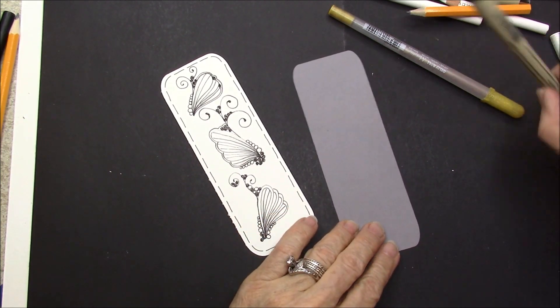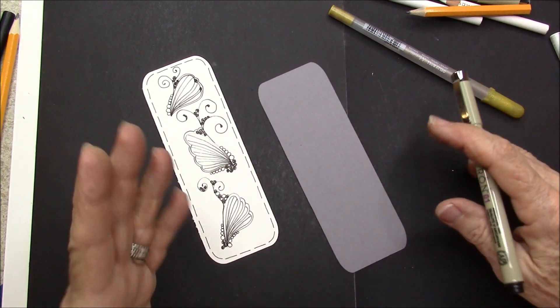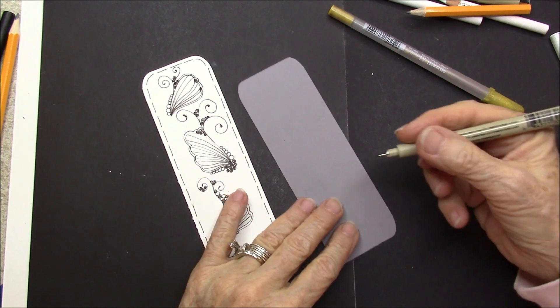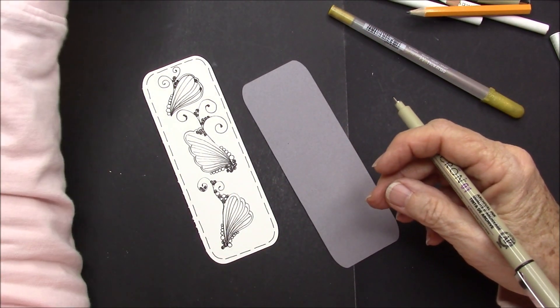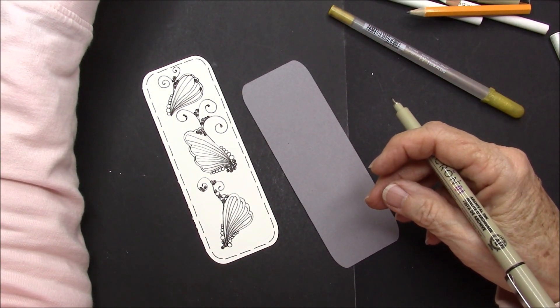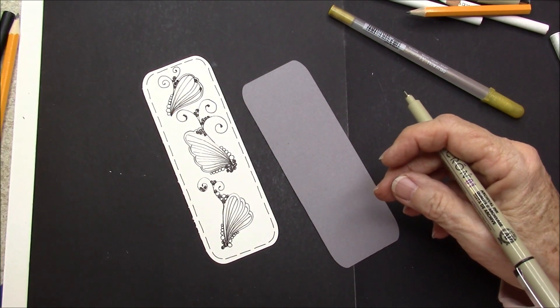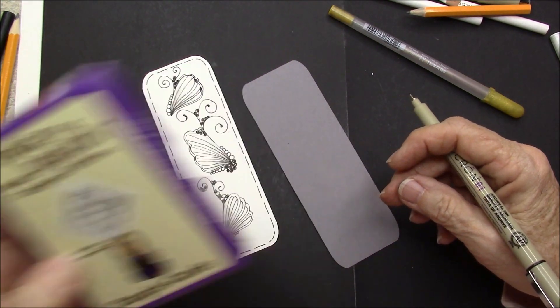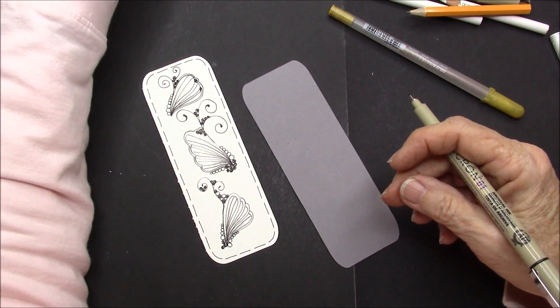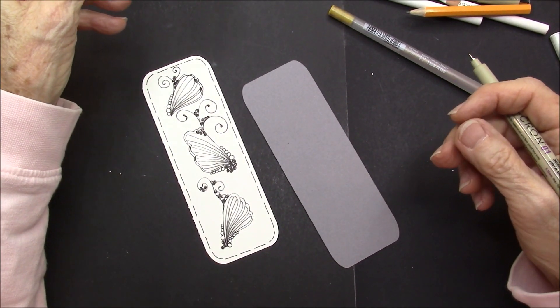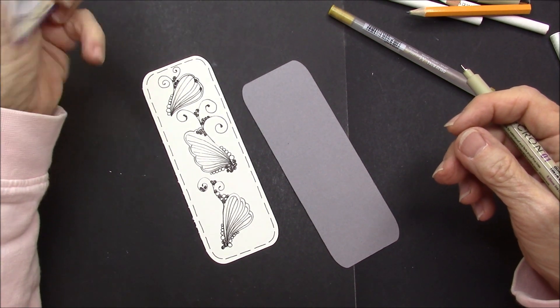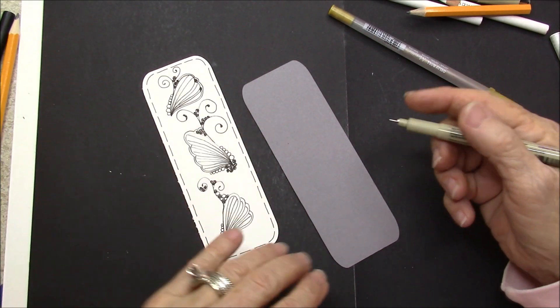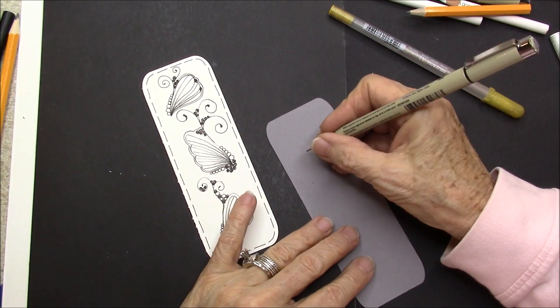So I'm going to do it on a grey bookmark so hopefully I can add some white jelly roll to it. And we're going to start out, oh, this is by Sandy Bartholomew. And again, it's in her brain yoga edition of tangle cards. I kind of got stuck on those for a while. But I love these little cards. They're a great little pack.